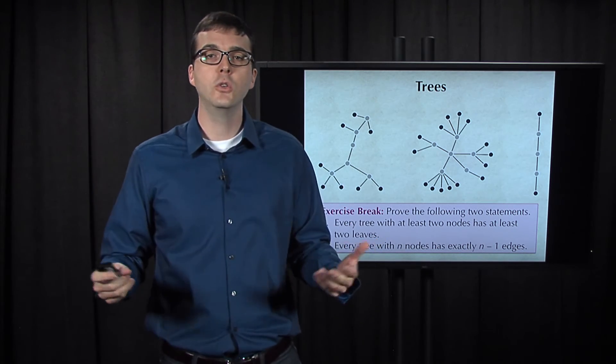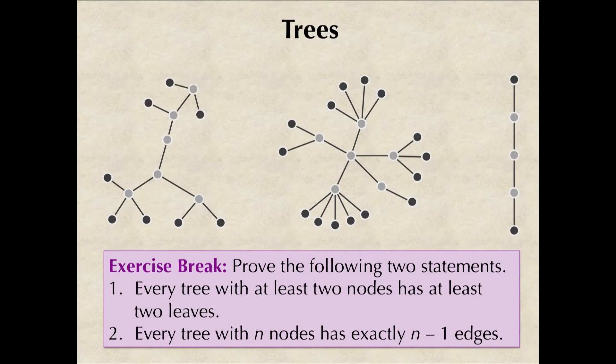Also, a tree with n nodes has exactly n-1 edges. For example, the tree on the left has 14 nodes, so regardless of what shape the tree has or how its nodes are connected, we know that it must have 13 edges.